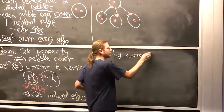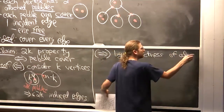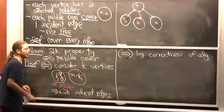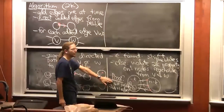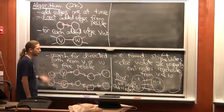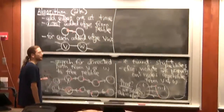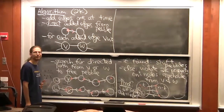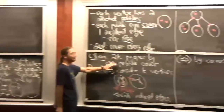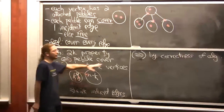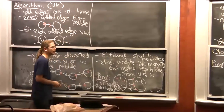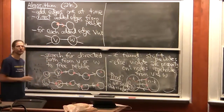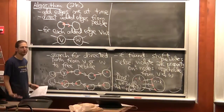This proves correctness of the algorithm and also completes the proof of the claim: if you have the 2k property, the failure case can never happen, so the algorithm always finds a path, always shifts pebbles successfully, and produces a pebble cover. The algorithm itself tells you where any violation would be, which lets you prove the theorem.